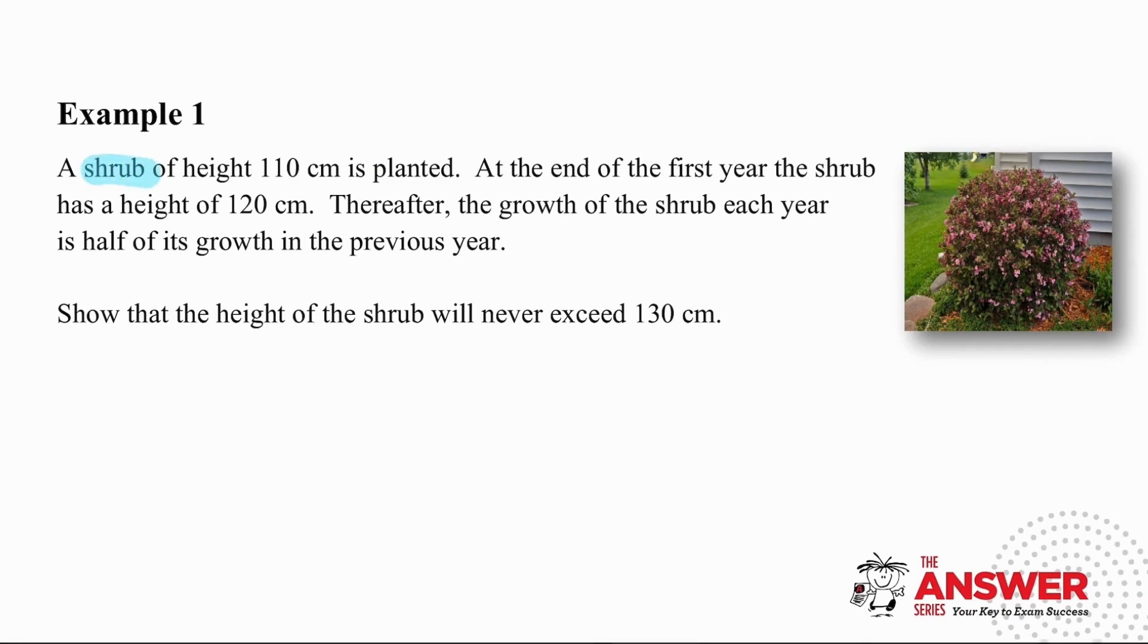In the first example we have a shrub given with a height of 110 centimeters before we plant it. By the end of the first year the shrub has a height of 120 centimeters. Thereafter the growth of the shrub each year is half of its growth in the previous year, and we are being asked to show that the height of the shrub will never exceed 130 centimeters.